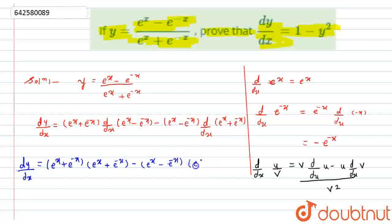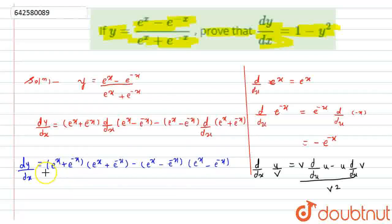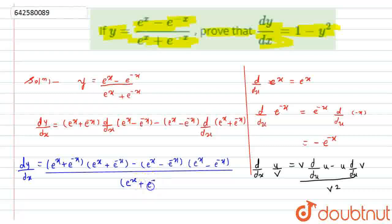Similarly, minus (e raised to x minus e raised to minus x) as it is, times d by dx of (e raised to x plus e raised to minus x) — because of the derivative of e raised to minus x, the plus sign becomes minus. All of this divided by v square, which is (e raised to x plus e raised to minus x) squared.